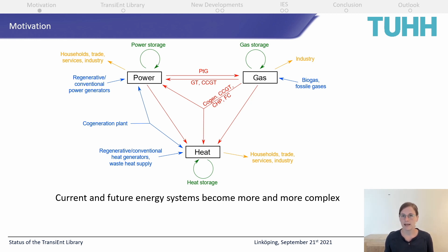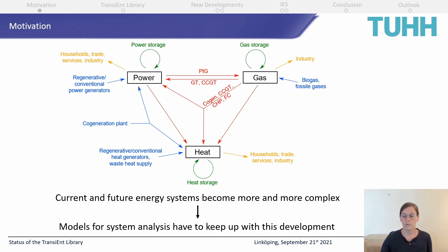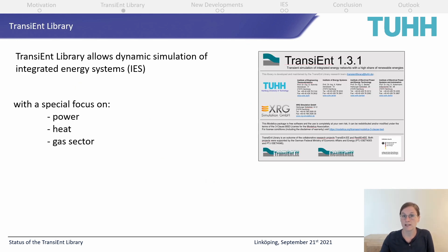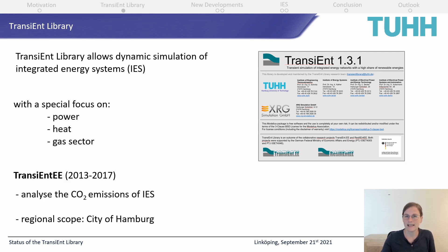When we as system analyzers want to keep up with this challenge, we need to develop models that are not only adjustable and reusable for different scenarios and research interests, but also stay comprehensible even with growing complexity. This is why our predecessors started to develop the Transient Library to allow dynamic modeling and simulation of integrated energy systems, with a special focus on the power, heat, and gas sectors. The Transient EE project, which started in 2013, focused on the CO2 emissions of integrated energy systems, with the city of Hamburg as the regional scope.